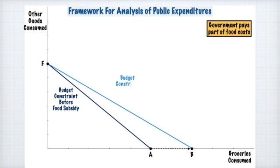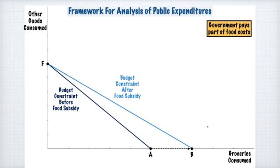The new budget constraint is the light blue one after the subsidy. Point F remains completely unchanged because the individual spent all their money on other goods and nothing on groceries — therefore they have no money left to purchase food stamps, which means they get no subsidy. And if they spend all their money on groceries, they'll be able to afford even more because they get that roughly 30% subsidy on their food costs.